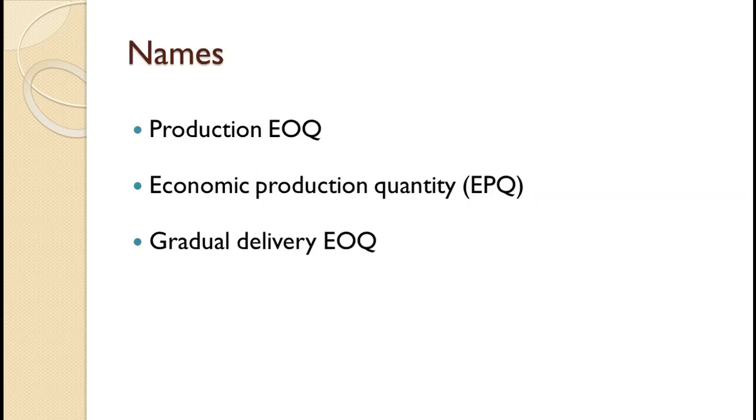This model is known by various names. They include production EOQ, economic production quantity or EPQ, and gradual delivery EOQ. All of these names refer to the same model.